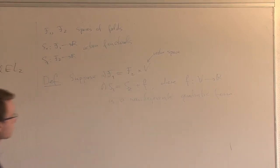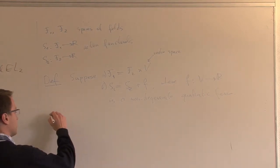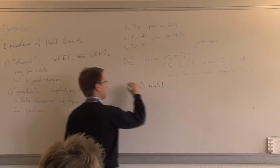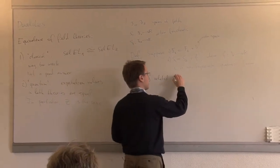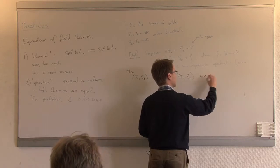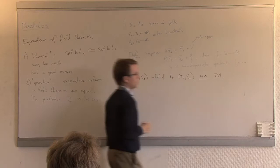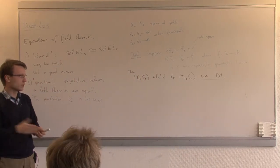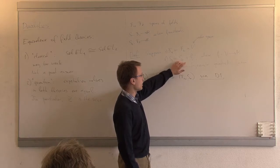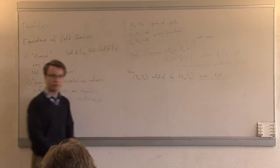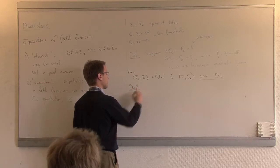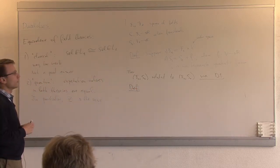Under these assumptions, F1, S1 is related to the theory F2, S2 via transformation D1. If your action functional is some other action functional plus a non-degenerate quadratic form, you can get rid of the quadratic form. That's the first transformation. I'll have three types: D1, D2, and D3. Let me just write them down.